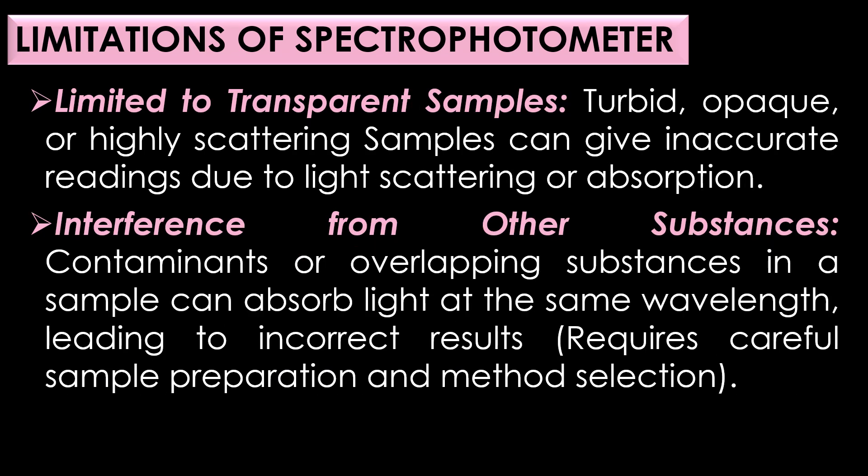Limitations of spectrophotometer. The first limitation is limited to transparent samples — spectrophotometers are primarily effective for transparent or translucent samples. Turbid or highly scattered samples like suspensions or emulsions can give inaccurate readings due to light scattering or absorption. The second limitation is interference from other substances — contaminants or overlapping substances in a sample can absorb light at the same wavelength, leading to incorrect results, requiring careful sample preparation and method selection.